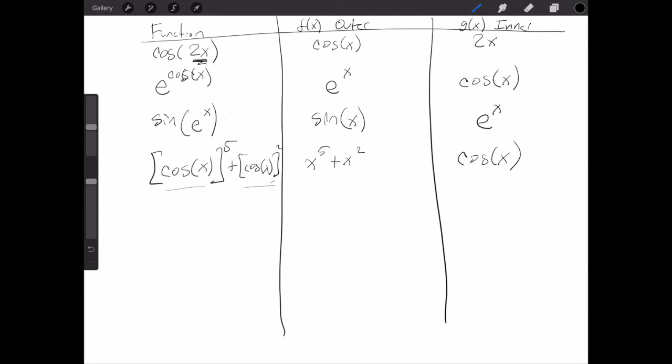You could also do this using addition rule and just treat them separately as cosine of x to the 5th and then your outer function will be x to the 5th and your inner function will be cosine of x.